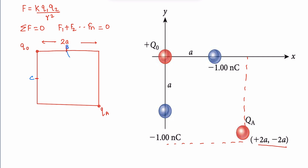From this point there is a triangle. What is this distance — 2a? What is this distance — a? The full distance is 2a. Now we can solve r_ab, which equals the square root of a² + (2a)², which equals the square root of 5·a.